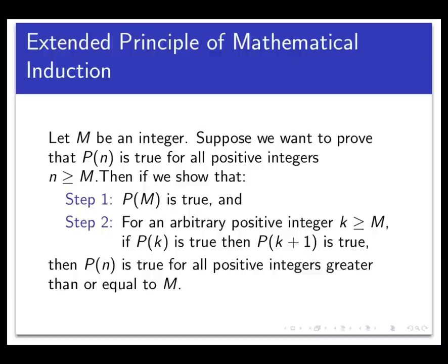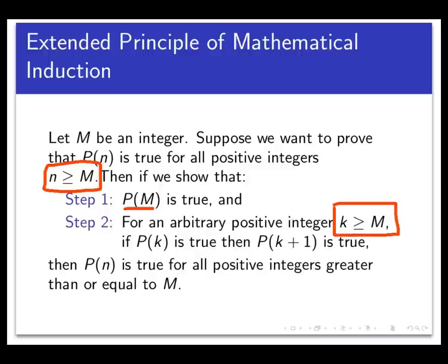The extended principle of mathematical induction is a modification of the standard principle. If we're trying to prove a predicate p(n) is true not necessarily for all natural numbers but for all natural numbers greater than or equal to some integer m, we proceed as follows. For the base case, we prove p(m) rather than p(1) — m acts as a threshold. Then we assume the inductive hypothesis that p(k) is true for some k ≥ m, and prove p(k+1) is true. Otherwise it's exactly the same as standard induction.